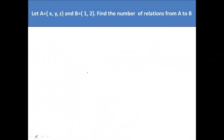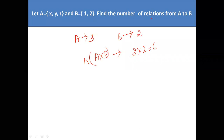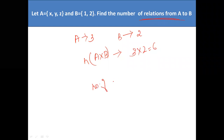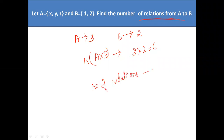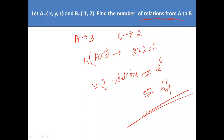Next question: A has 3 elements, B has 2 elements. How many elements does A cross B have? It is 3 × 2 = 6. The number of relations is 2 to the power 6. And 2⁶ = 64. So the number of relations is 64.